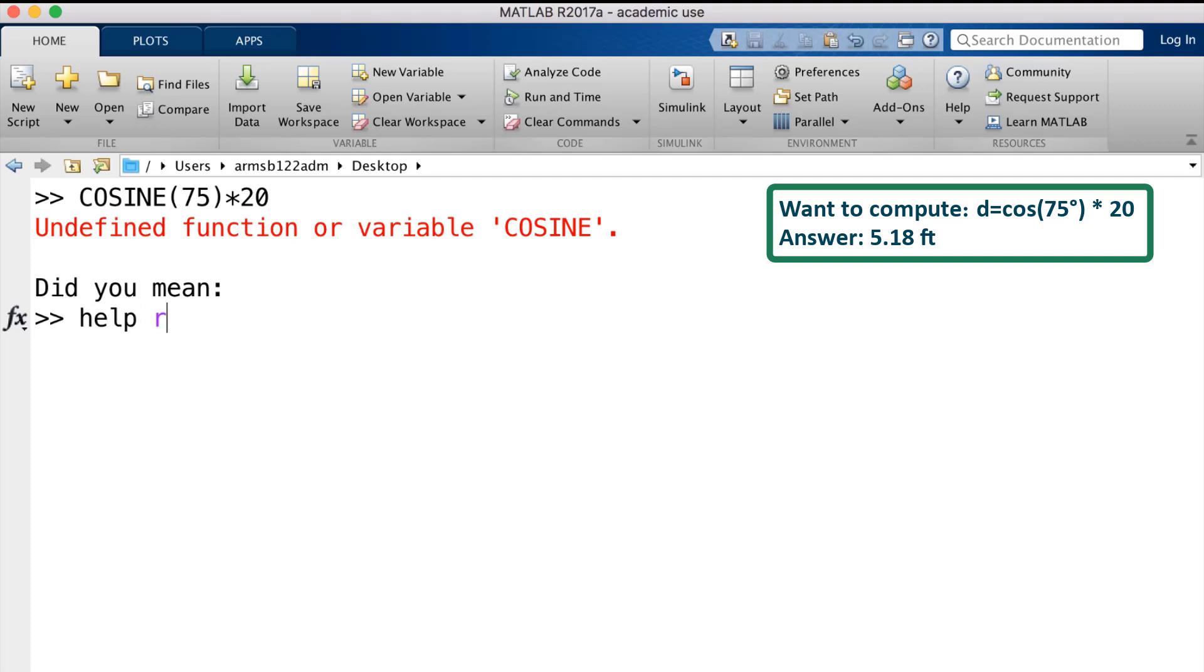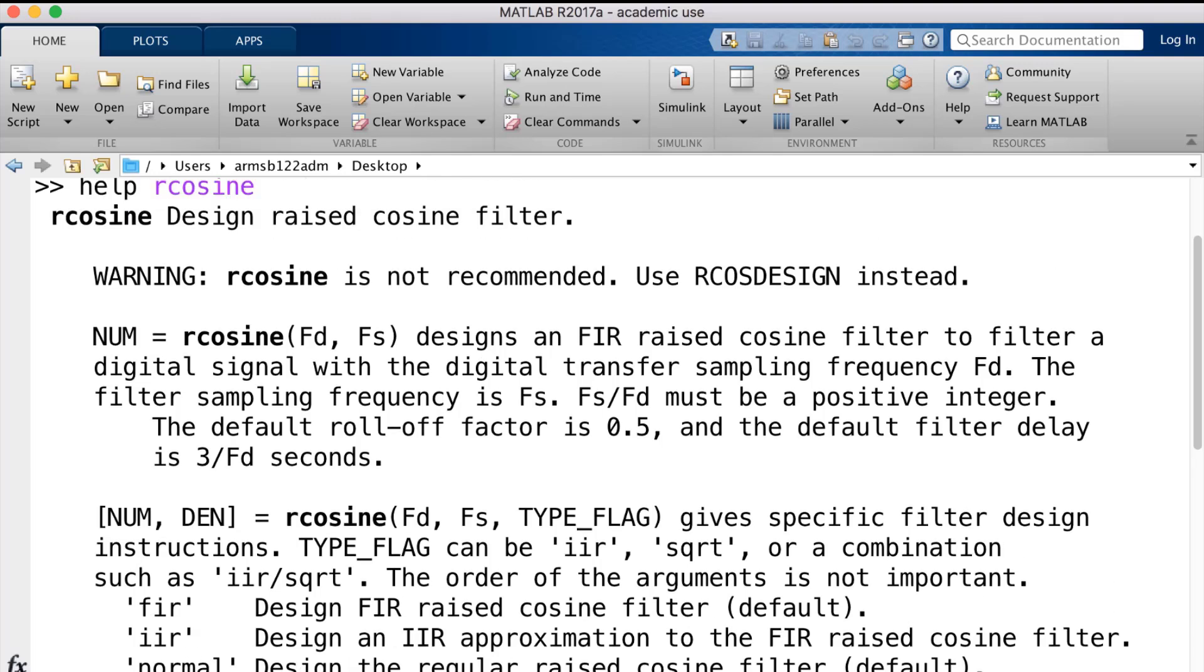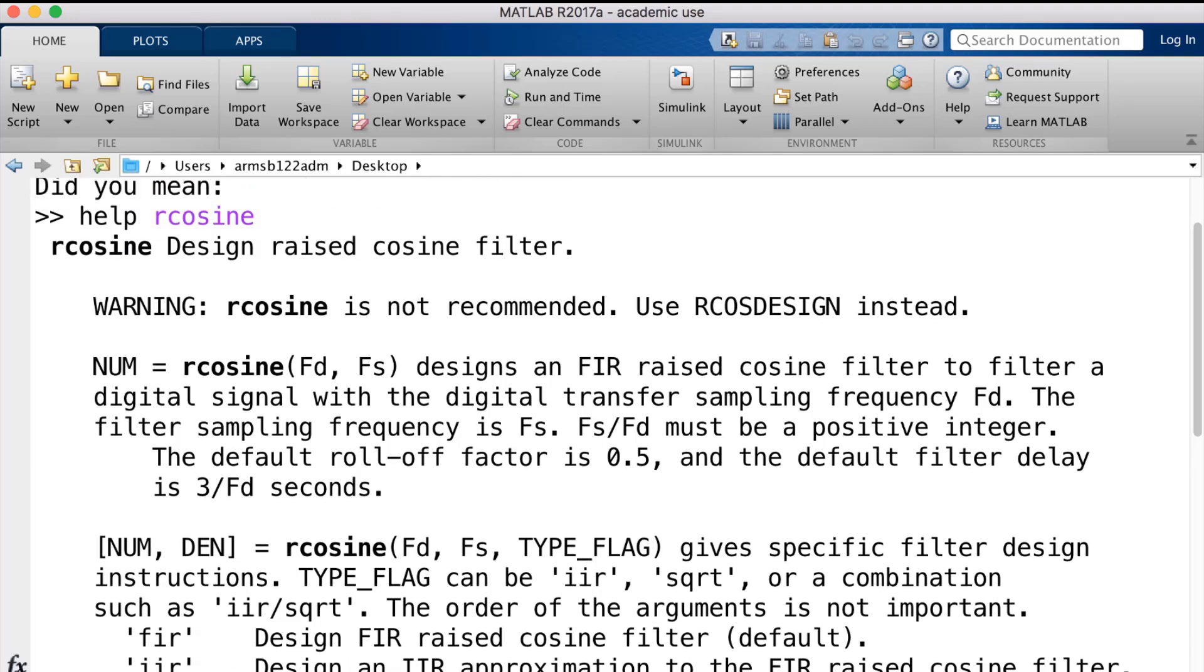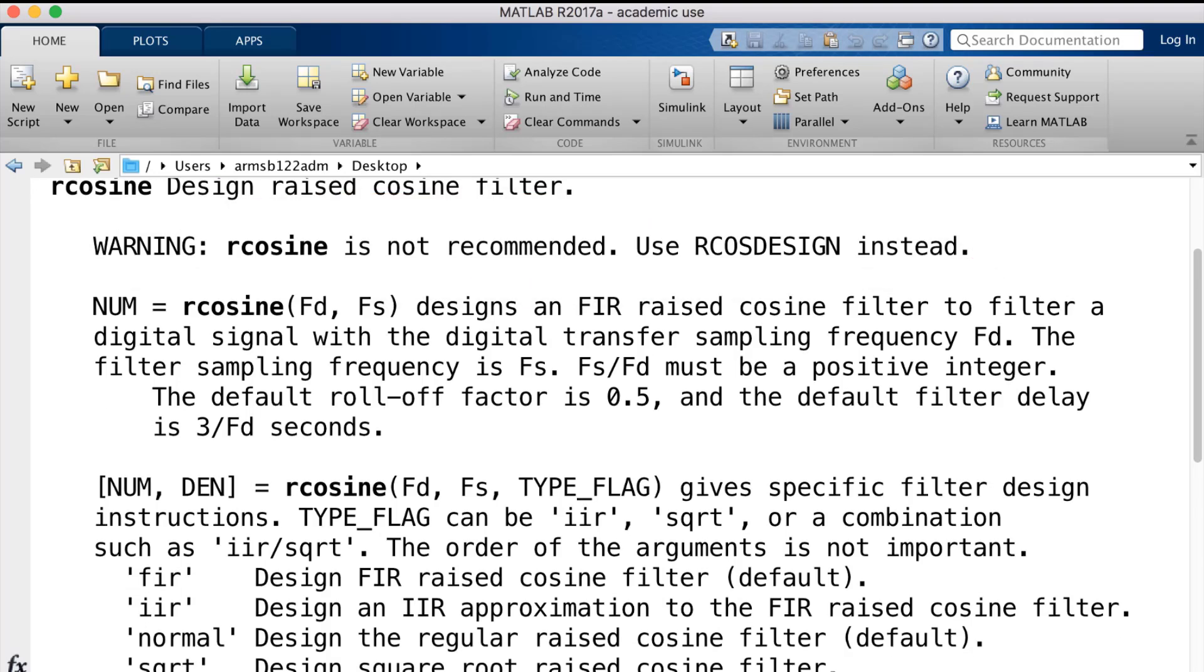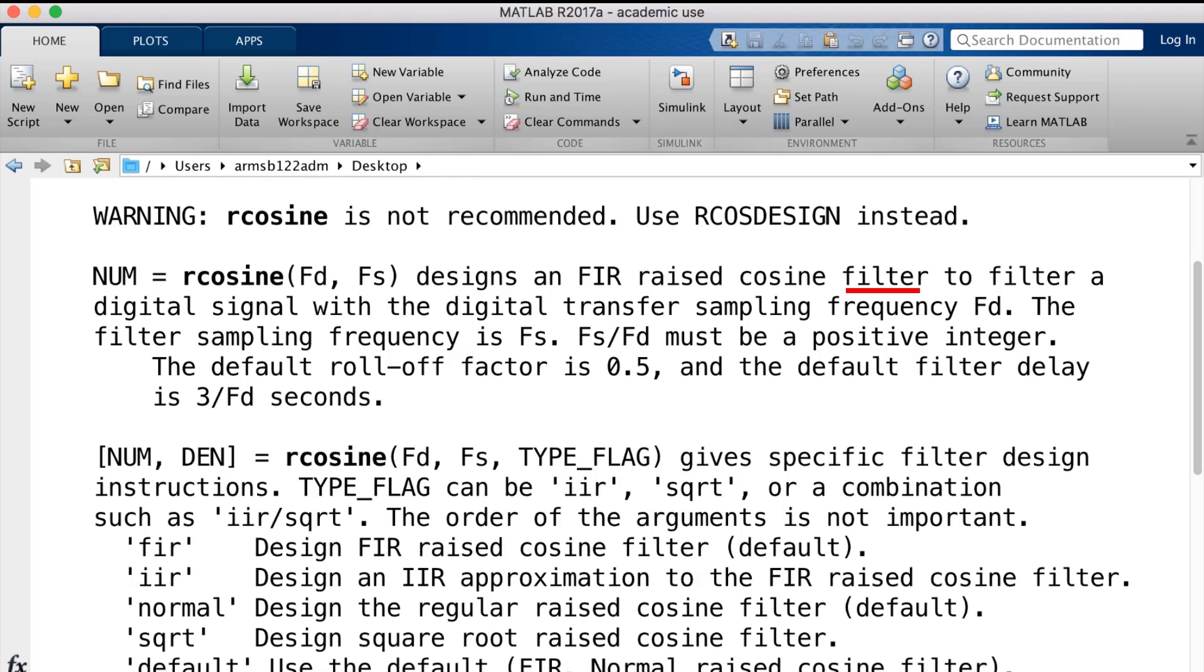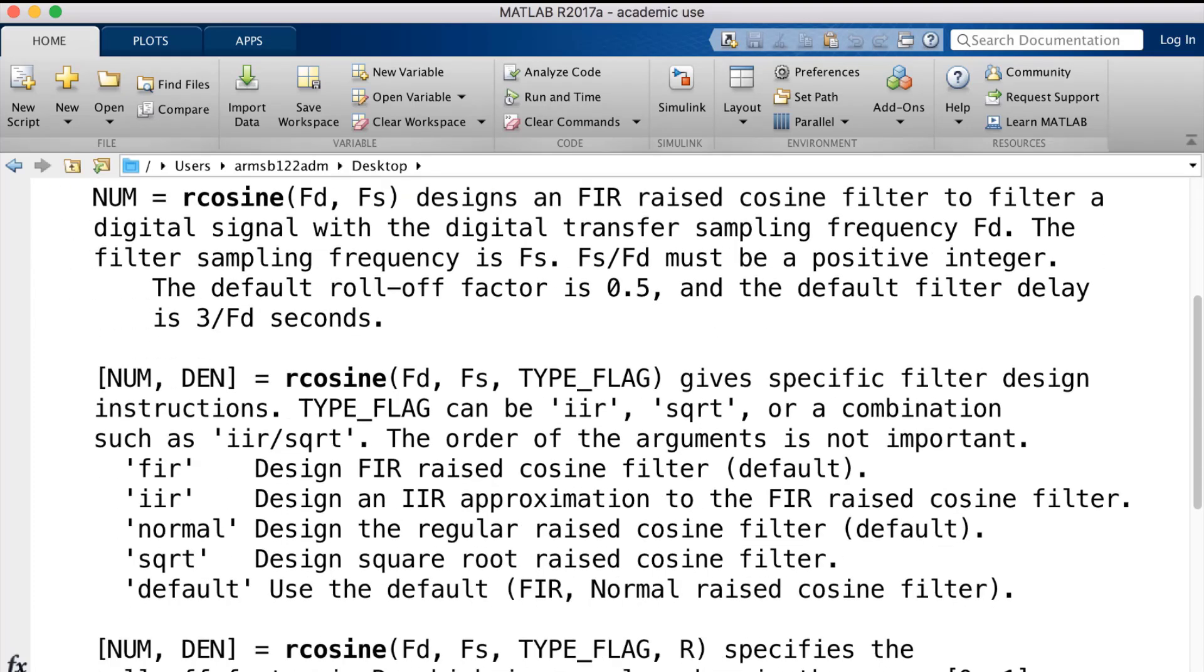So we know how to do this now. We'll type help followed by our function arcosine. After we push enter, we get some information here on our function arcosine. They are first recommending a more improved function to use instead of arcosine, but let's see what arcosine does. Okay, so it looks like it's a filter, and we definitely know that we are not looking for any filtering in this question. We are just trying to figure out how to take the cosine of an angle 75 degrees. So let's go back and try and see how we can do this.